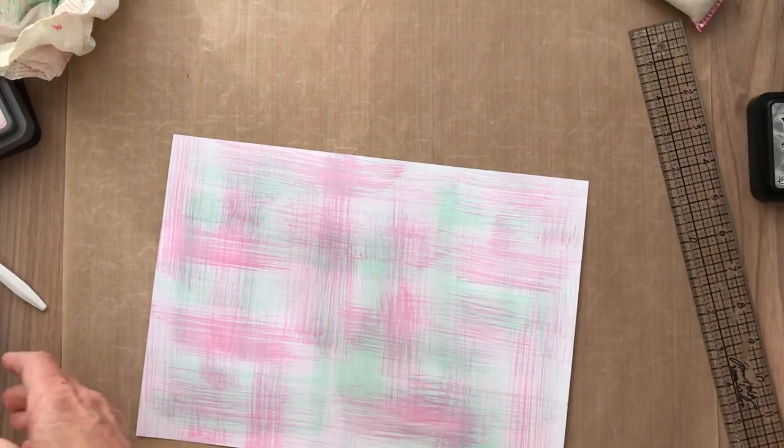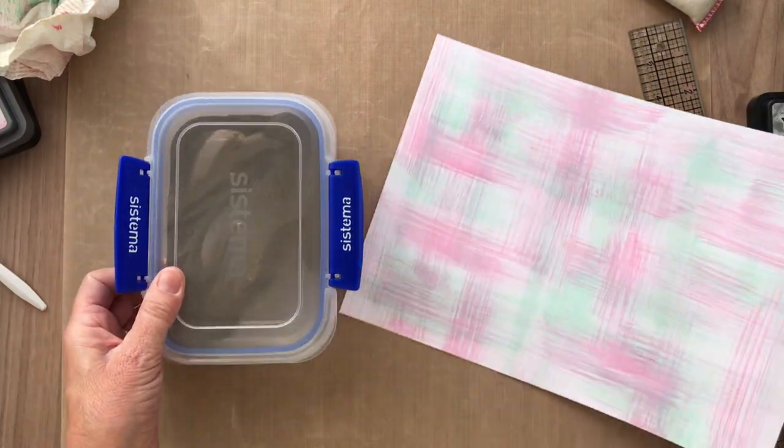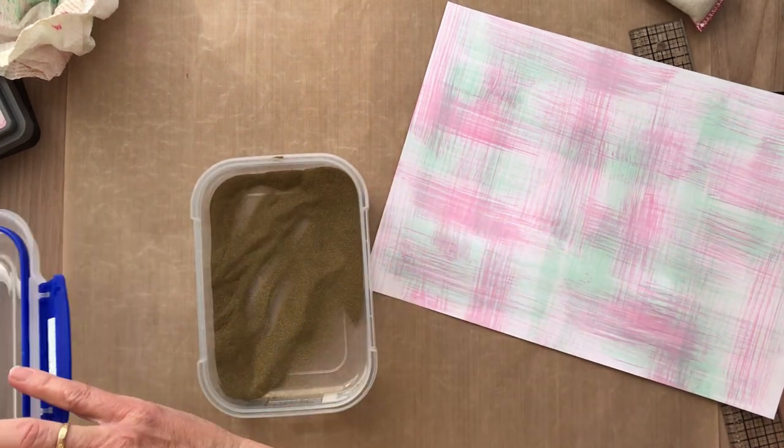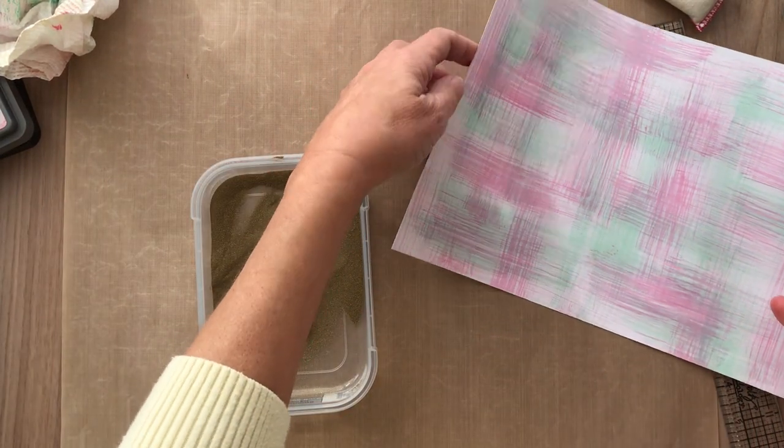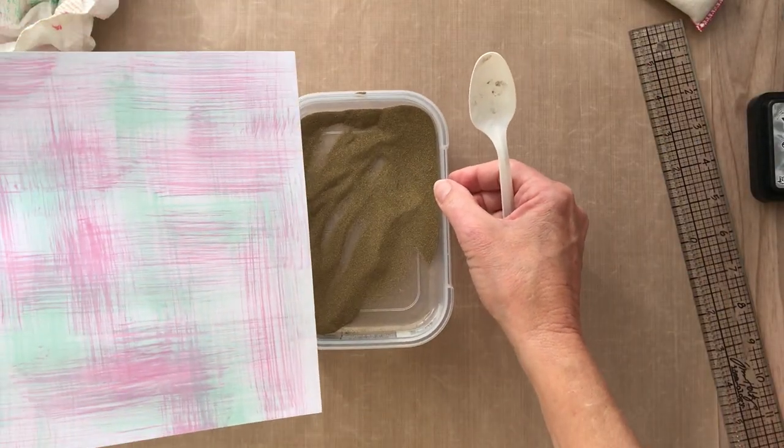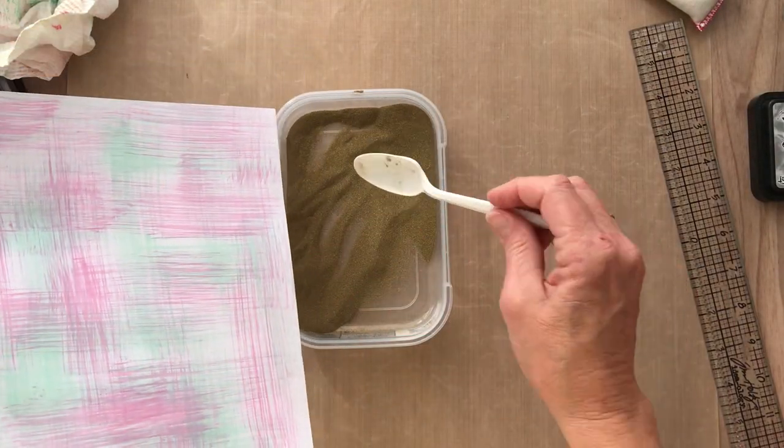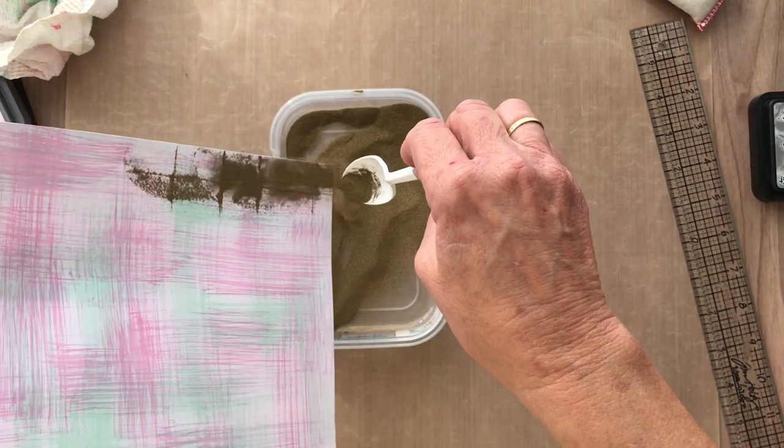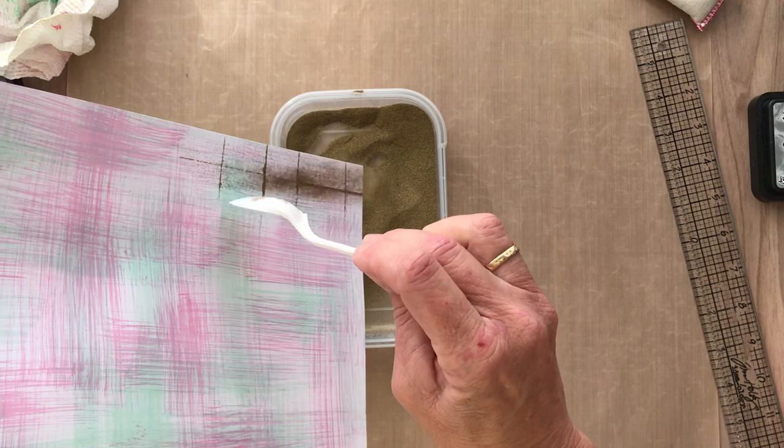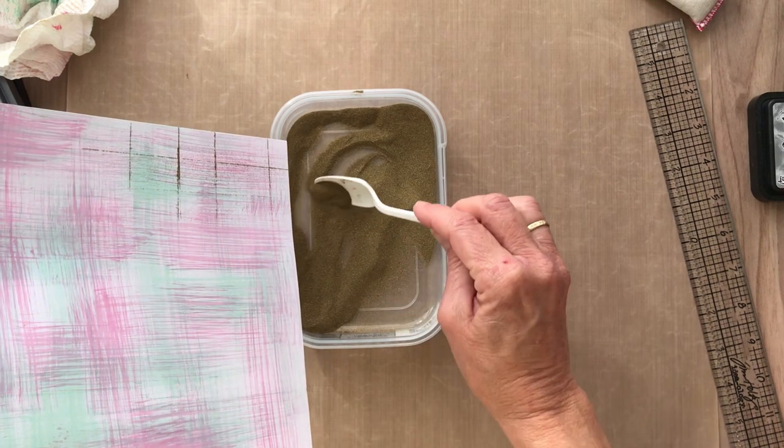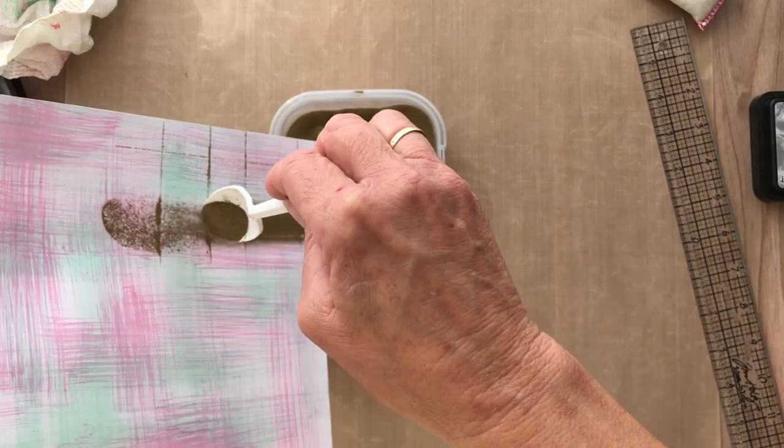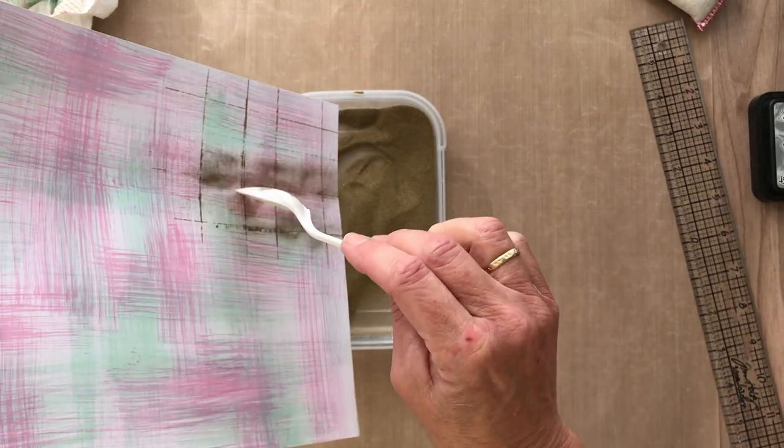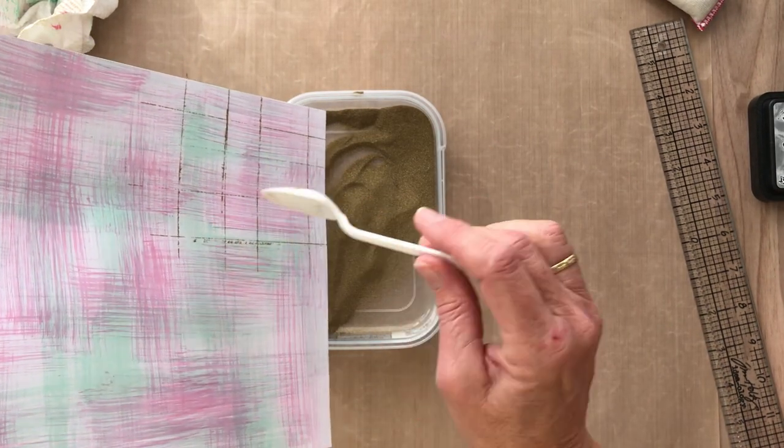Let's have a look at what we've got. I'm bringing in my embossing powder now, this is my Princess Gold. You can use any color you like. What I'm going to do is just put my embossing powder on, and can you see those lines starting to appear? A bit like magic isn't it.